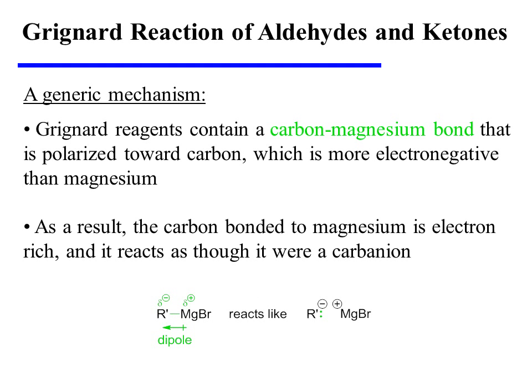Turning our attention toward the mechanism, it is useful to note that Grignard reagents contain a carbon-magnesium bond. This bond is polarized toward the carbon, which is more electronegative than the magnesium. As a result, the carbon bonded to magnesium is electron-rich and behaves as though it were a carbanion.